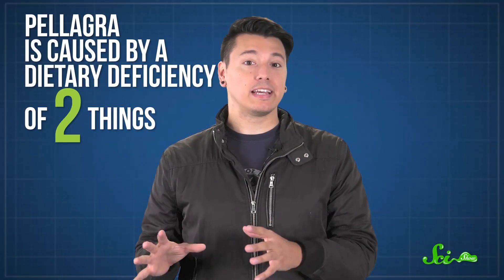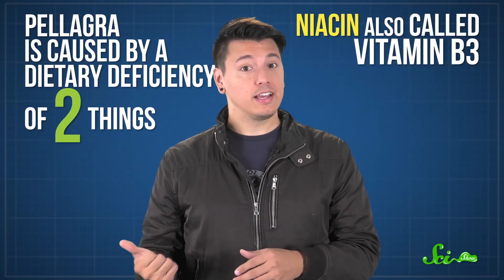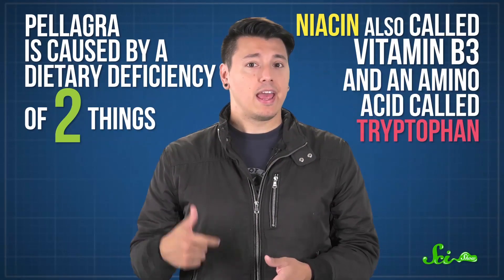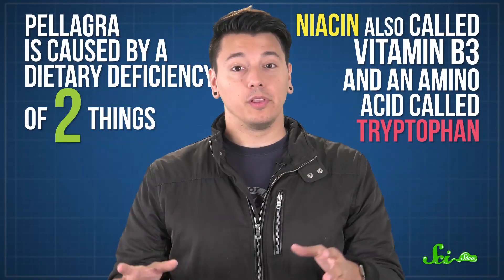Another likely origin for the myth is a condition called pellagra. Pellagra is caused by a dietary deficiency of niacin, also called vitamin B3, and an amino acid called tryptophan. Normally, your body uses niacin to turn food into energy. And even if you aren't getting enough of it in your diet, your body will also create niacin from tryptophan, so everything should still run smoothly.